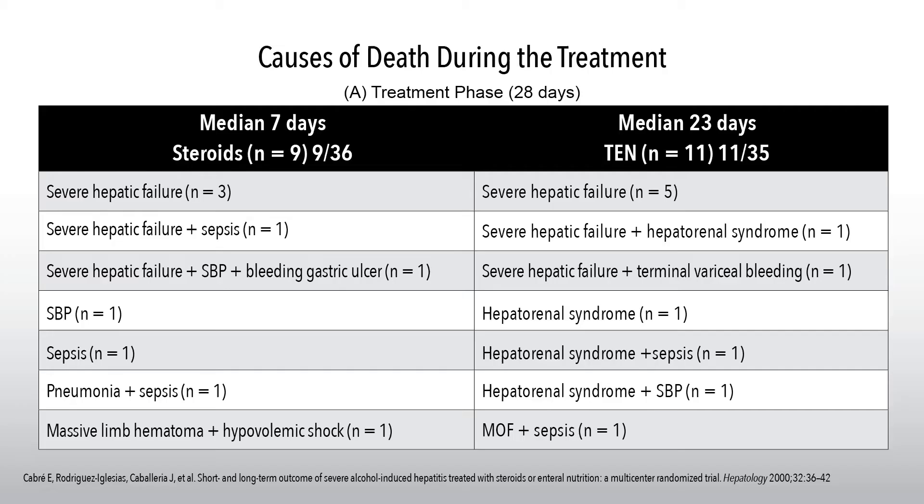Total enteral nutrition does not appear to increase complications. There are often fears about placing tube feeds due to discomfort or perception, but the benefit outweighs the risks. During the follow-up phase, steroids showed many more complications compared to minimal complications in the total enteral nutrition group. Close monitoring for pulmonary, blood, urine, and peritoneal infections is critical. In conclusion, total enteral nutrition is as effective as steroids short-term, may be safer long-term, and supplies intensive nutritional support for patients with severe nutritional deficiencies.